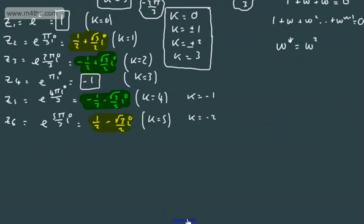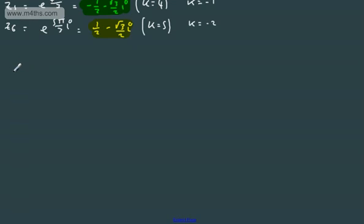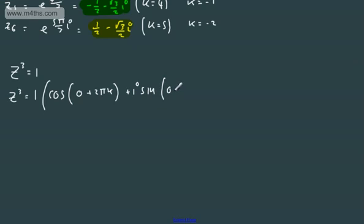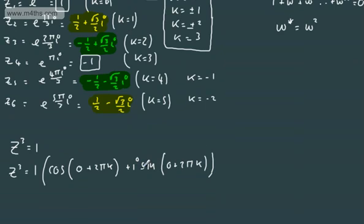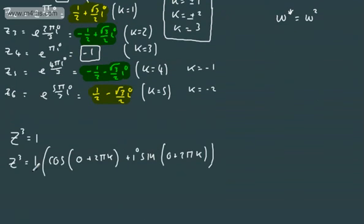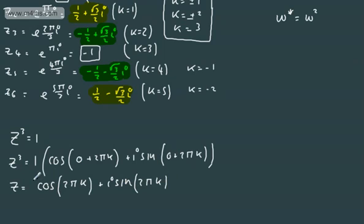The alternative approach uses De Moivre's theorem. Taking z³=1, we write z³ = cos(2πk) + i·sin(2πk). Using De Moivre's theorem, z = [cos(2πk) + i·sin(2πk)] to the power of 1/3, so z = cos(2πk/3) + i·sin(2πk/3). Then we substitute values of k.